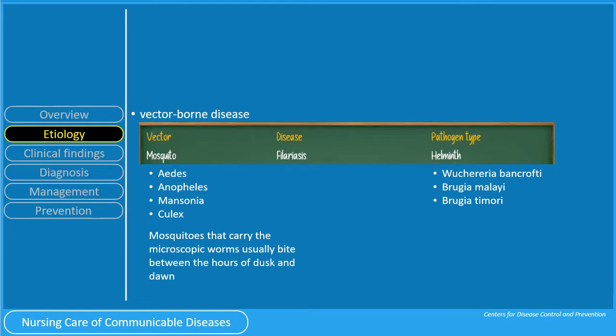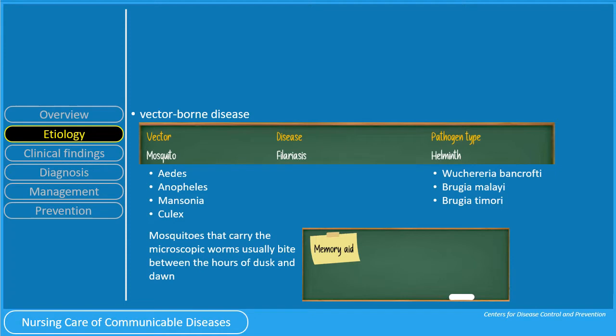Mosquitoes that carry the microscopic worms usually bite between the hours of dusk and dawn. Going back to Dengue — remember our mnemonic? Dengue is for D, day-biting. For filariasis, the mnemonic is: Filaria, parang vampira — because they bite between the hours of dusk and dawn.